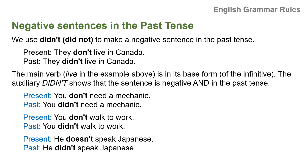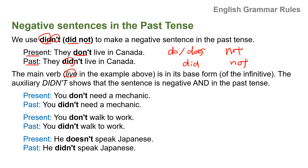Now let's think about negative sentences in the past tense. We use 'did not,' or the contraction 'didn't,' to make a negative sentence in the past tense. 'Do' and 'does' are present tense; 'did' is past. Present: they don't live in Canada. Past: they didn't live in Canada. The main verb 'live' is in its base form, and the auxiliary 'didn't' shows that the sentence is negative and in the past tense.